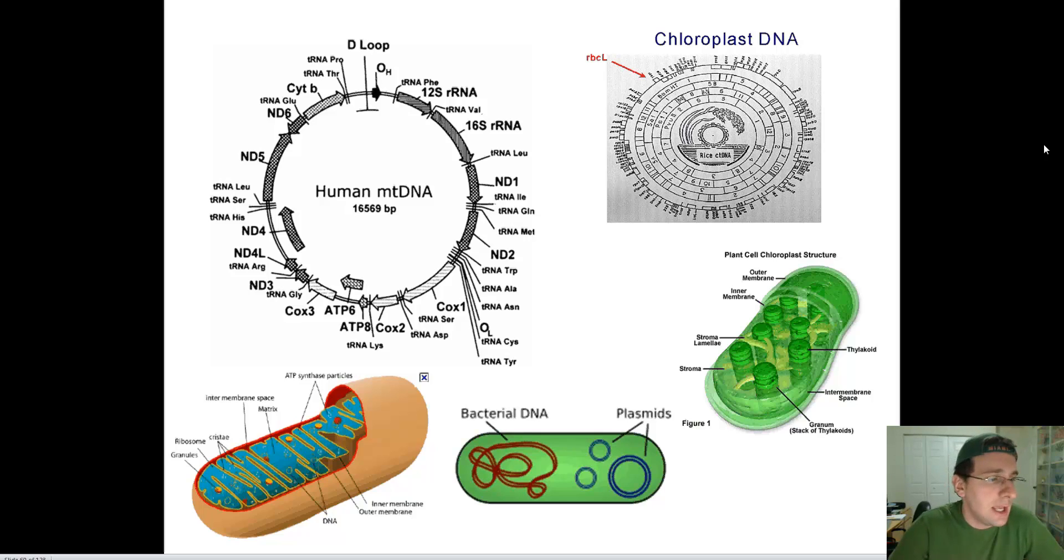So mitochondria and chloroplasts have their own DNA. And you see examples here of these circular-like DNAs, just like the bacterial DNA. Mitochondria is basically a bacteria that went inside of us, so it's a loop of DNA. And you can see pictures here of efforts to sequence this loop and figure out what each of the pieces of the DNA of the mitochondria and chloroplasts is involved with. But the take-home point is that mitochondria and chloroplasts, which are organelles, have their own DNA.